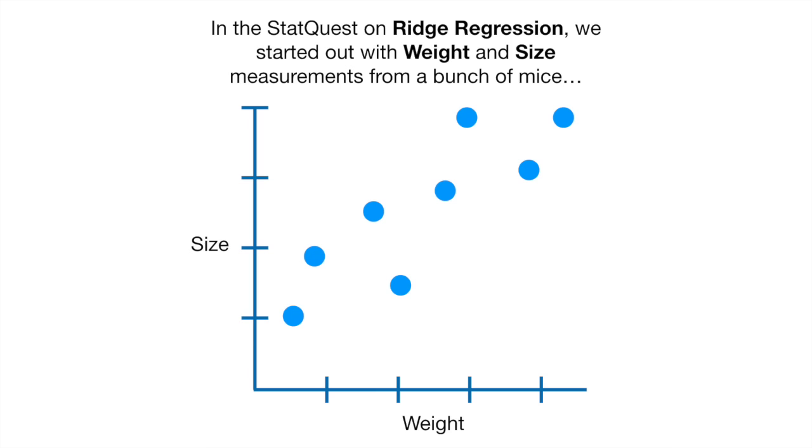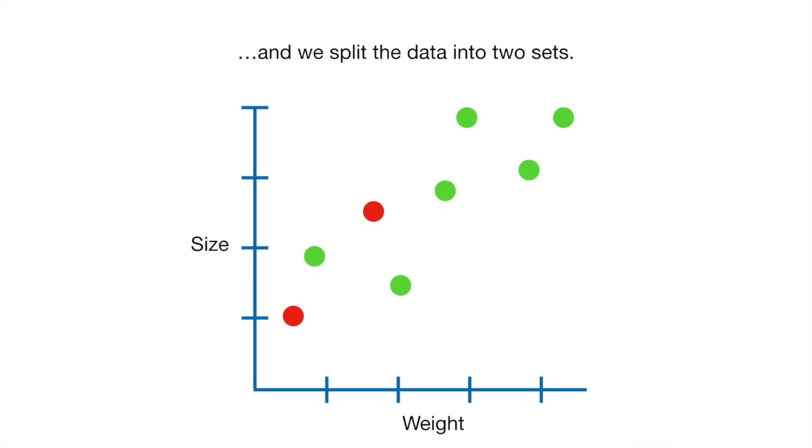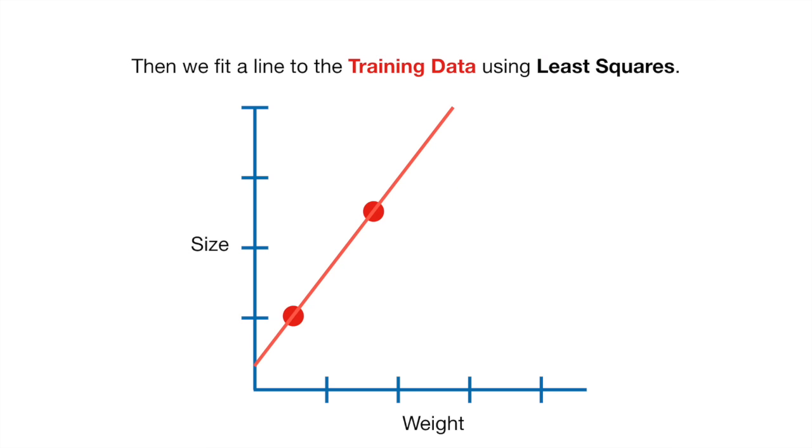In the StatQuest on Ridge Regression, we started out with weight and size measurements from a bunch of mice, and we split the data into two sets. The red dots were training data, and the green dots were testing data. Then we fit a line to the training data using least squares. In other words, we minimized the sum of the squared residuals.